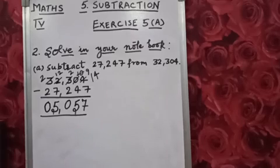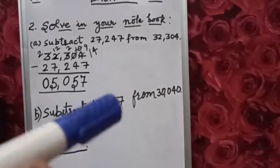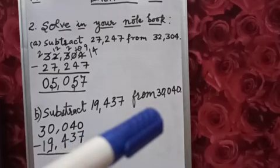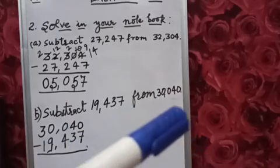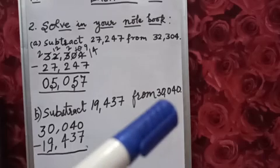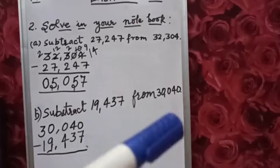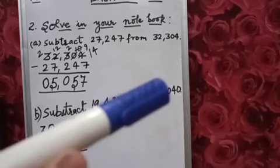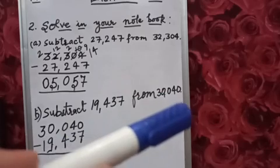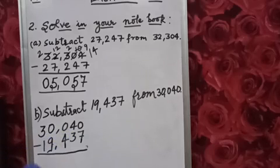Now let's see question B. The second question is subtract 19,437 from 30,040. It means you have to deduct 19,437 from 30,040. So the equation is 30,040 minus 19,437.